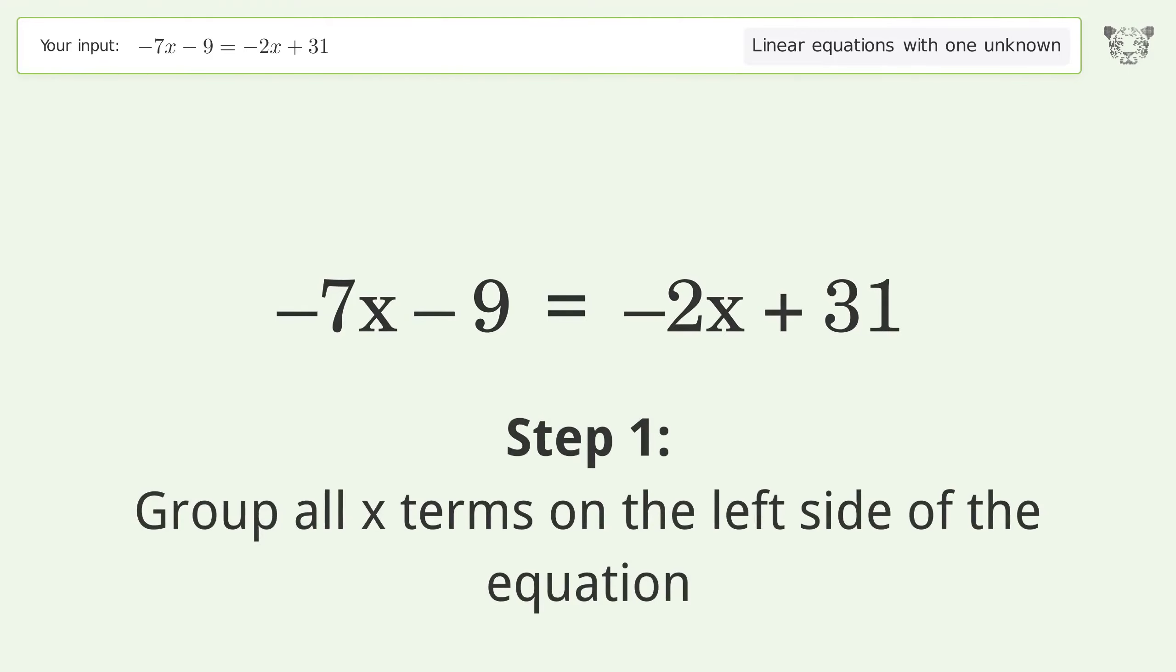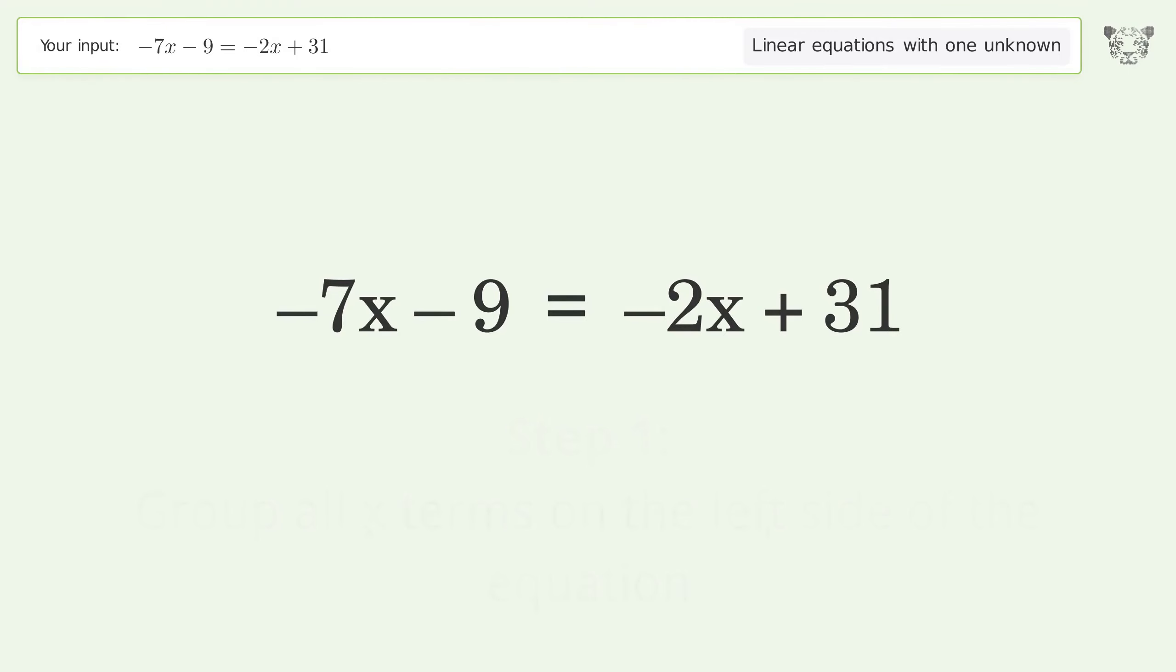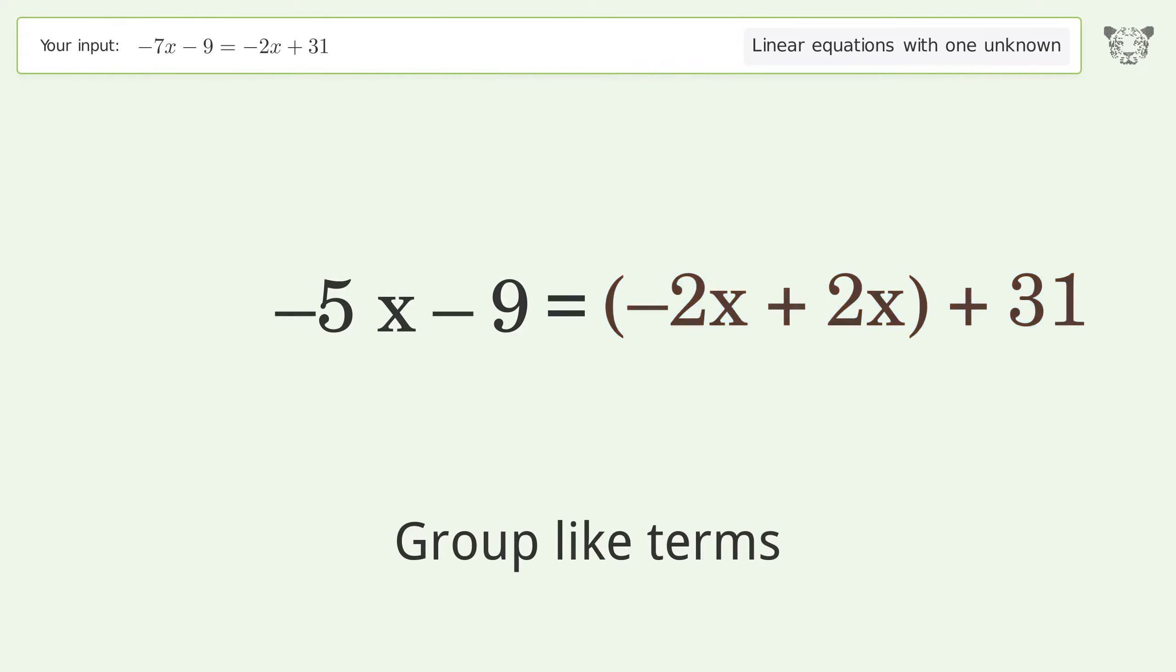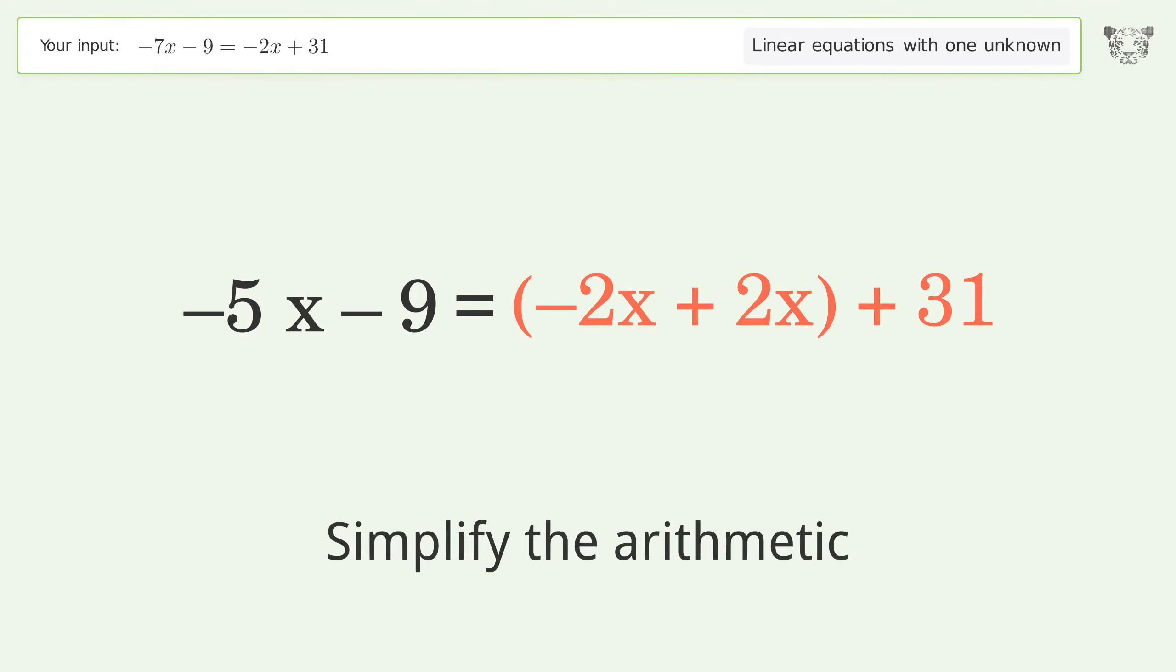Group all x terms on the left side of the equation. Add 2x to both sides. Group like terms. Simplify the arithmetic. Group like terms. Simplify the arithmetic.